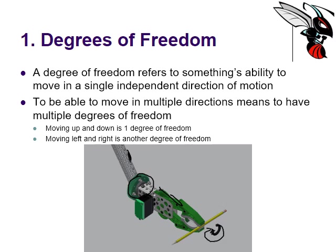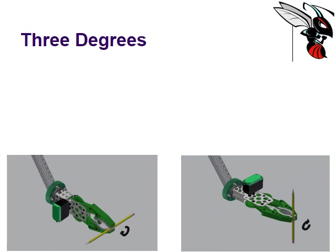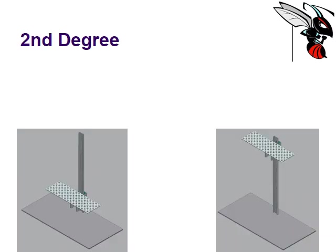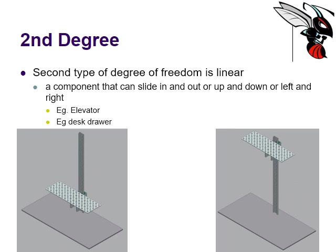The first most relevant degree of freedom is rotation about an axis parallel to the arm. So here's the arm, and the axis it's rotating around is parallel to that arm. For example, a claw bot holding a pencil parallel to the floor can turn and twist it so the pencil points toward the ceiling — that is a single degree of freedom.